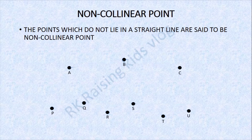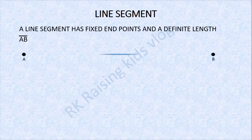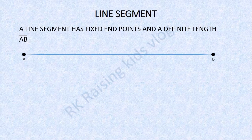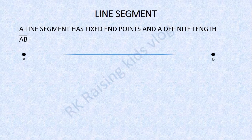The same thing applies to P, Q, R, S, D, U. Next: line segment. A line segment has fixed end points and a definite length. For example, line segment A — you can say this is a line segment because it has two fixed end points and a definite length, and the line is not passing through the points. So it's called a line segment.